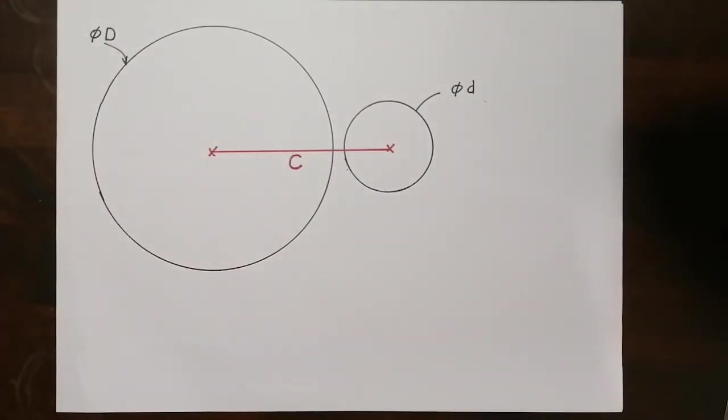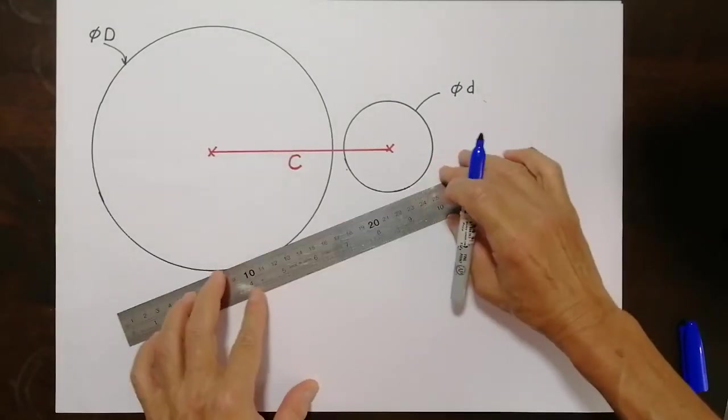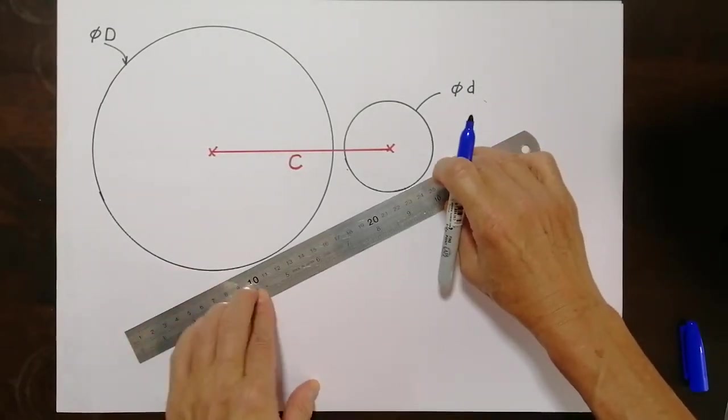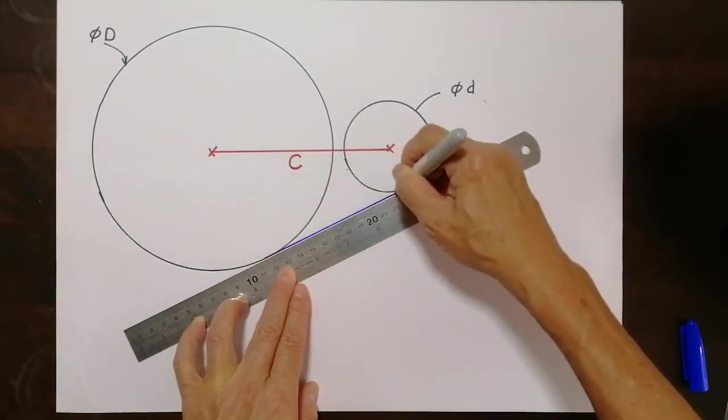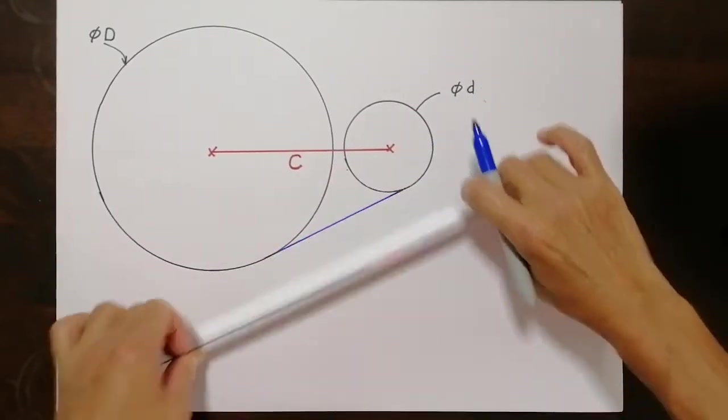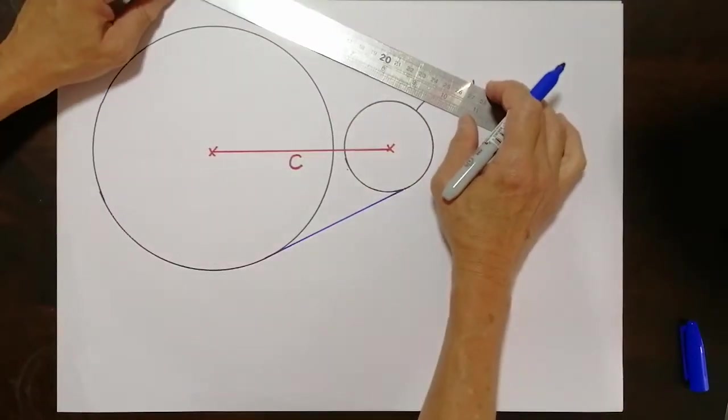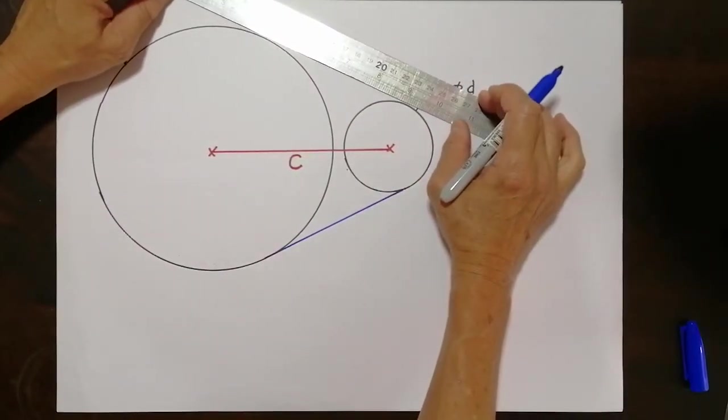Now we are very interested to find the belt length. That means the belt that goes along the hook of both pulleys. Allow me to draw a line tangent to both circles. And the beauty of the tangent you will notice later that it has some mathematical condition.